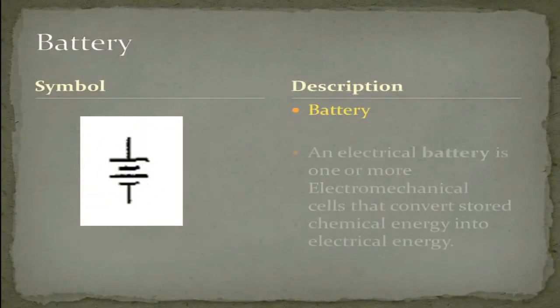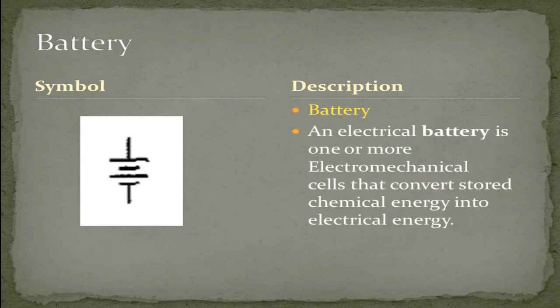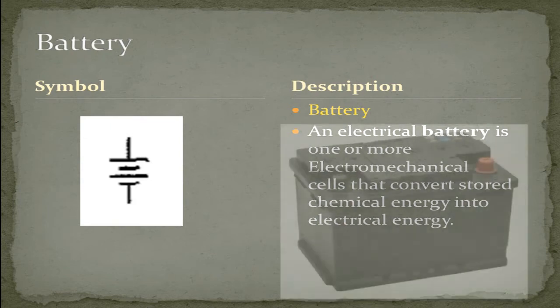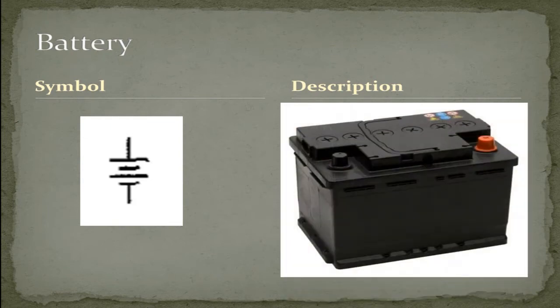A battery. An electrical battery is one or more electrochemical cells that convert stored chemical energy into electrical energy. Here's an illustration of a typical top post battery.